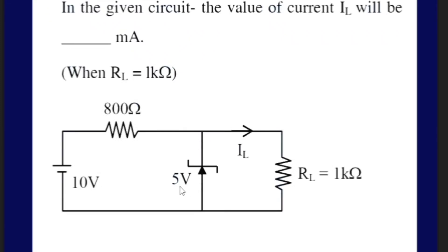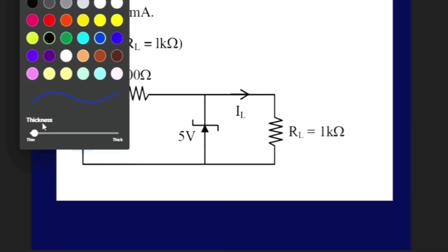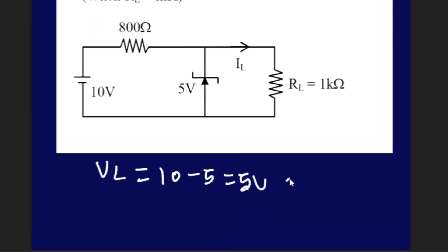There is 5V. The drop voltage — IL and RL. The RL is 10V. If you travel across the resistor, the drop is 5V. The value of V is equal to 5V.